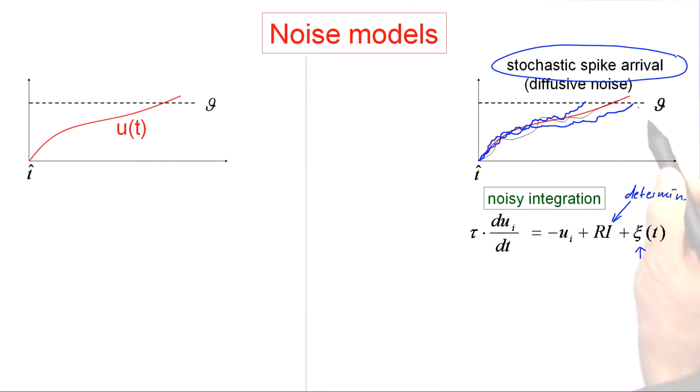It stays in some tube around the reference trajectory, but the exact spike timings vary between one trial and the next.